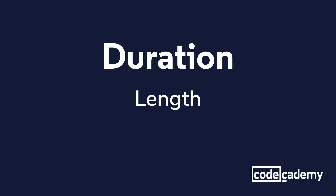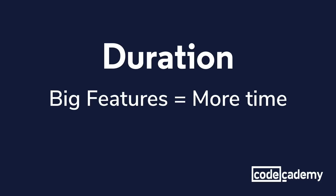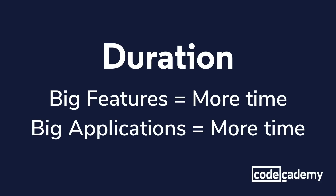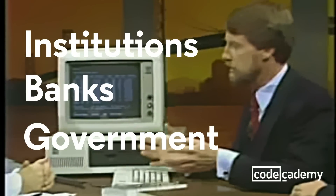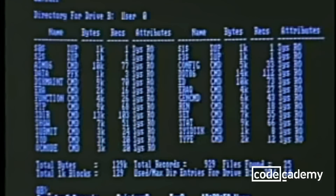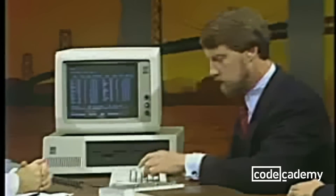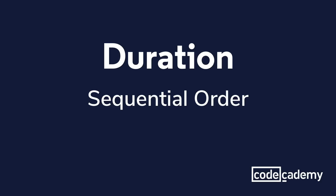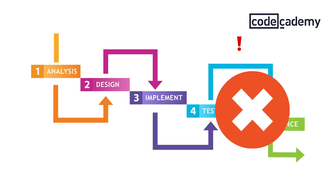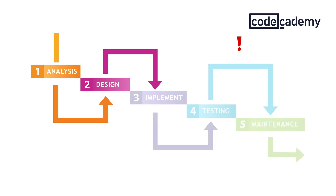The next defining feature of waterfall is duration — especially length. Some features and applications take longer to build than others. Especially with larger clients like institutions, banks, and government services, they likely have running systems that are working but a little antiquated. That means we have to engineer bridge-building software for translating and transpiling into the proper format. Going in sequential order also means time — some features require others to have been built first, and this sometimes means going back to a previous stage due to bugs, problems, or general vulnerabilities.